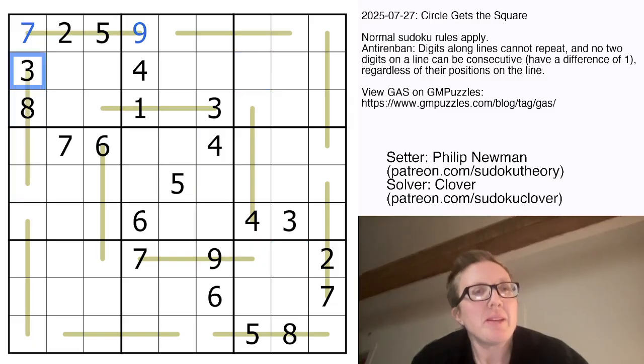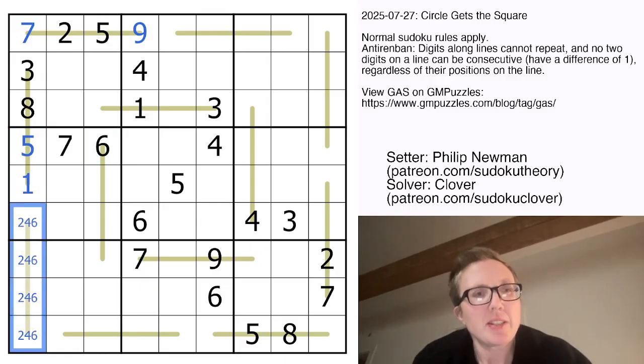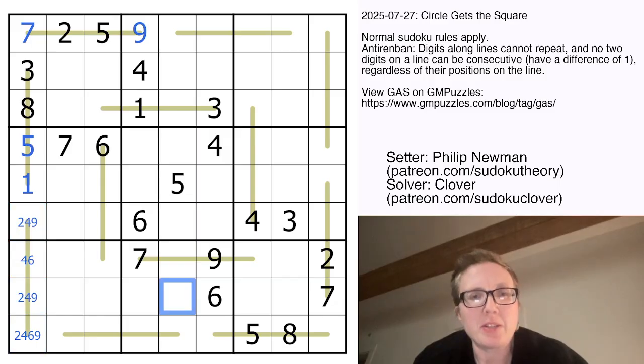Here we have a 3, we have an 8, so we cannot use a 2, 4, 7, or 9 anywhere. So the remaining digits are going to be 1, 5, and 6. And we can't use a 6 because there is a 6 in that region. So this works out like this. So these are going to be 2, 4, 6, and 9. That can't be a 6, that can't be a 2, or a 9. That can't be a 6, just by Sudoku.